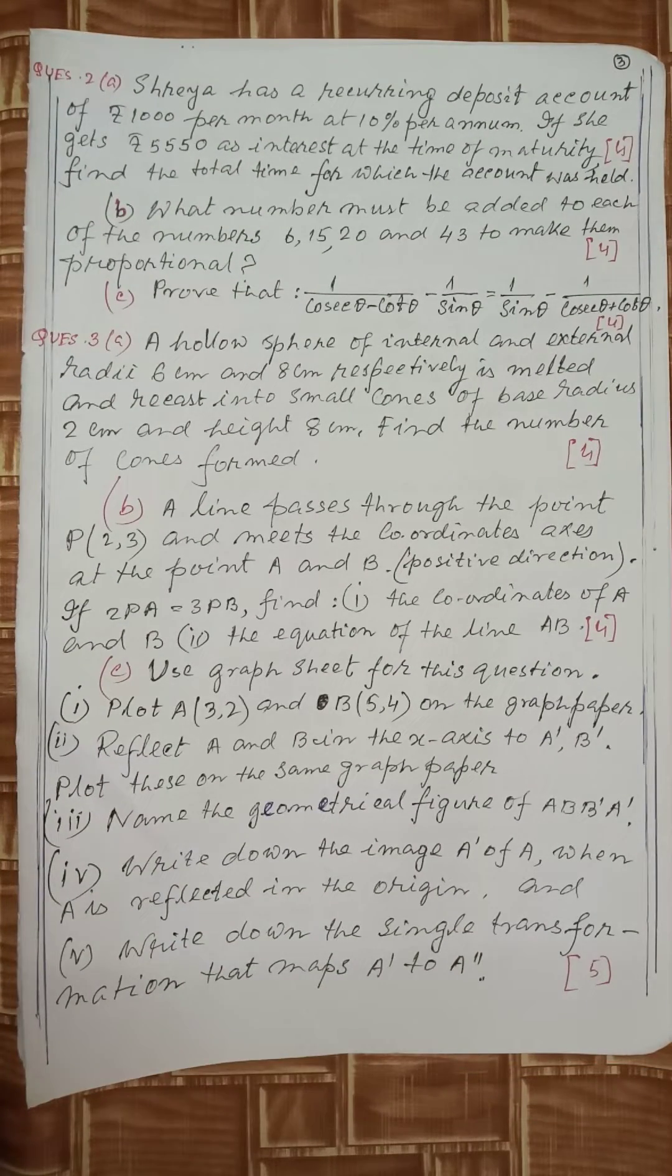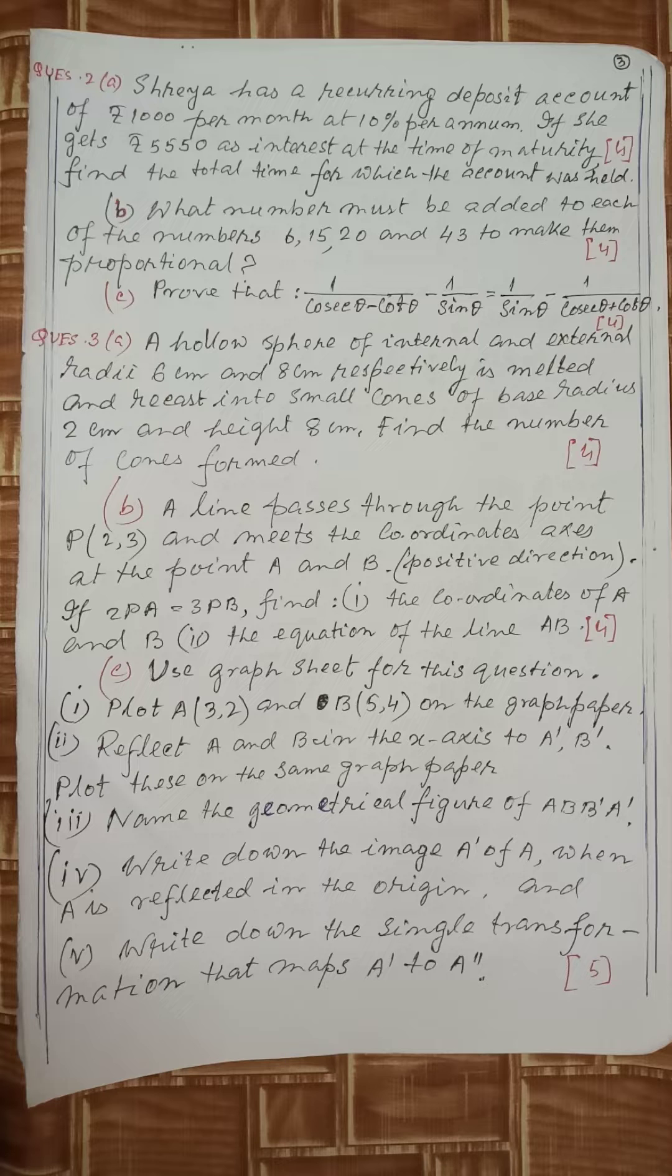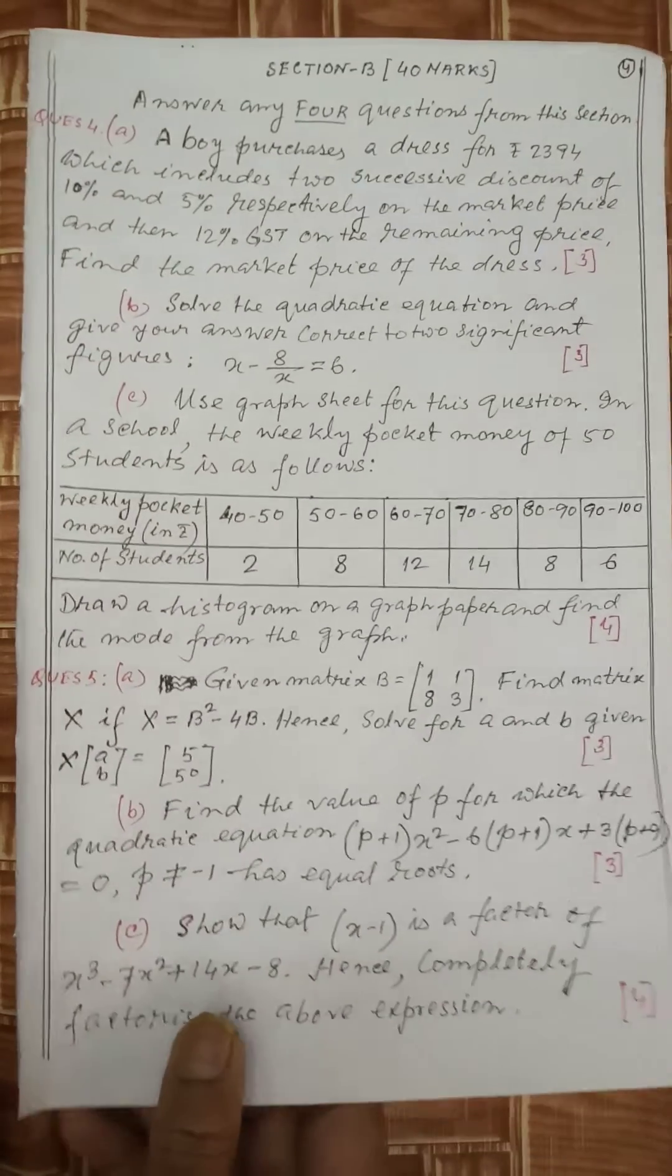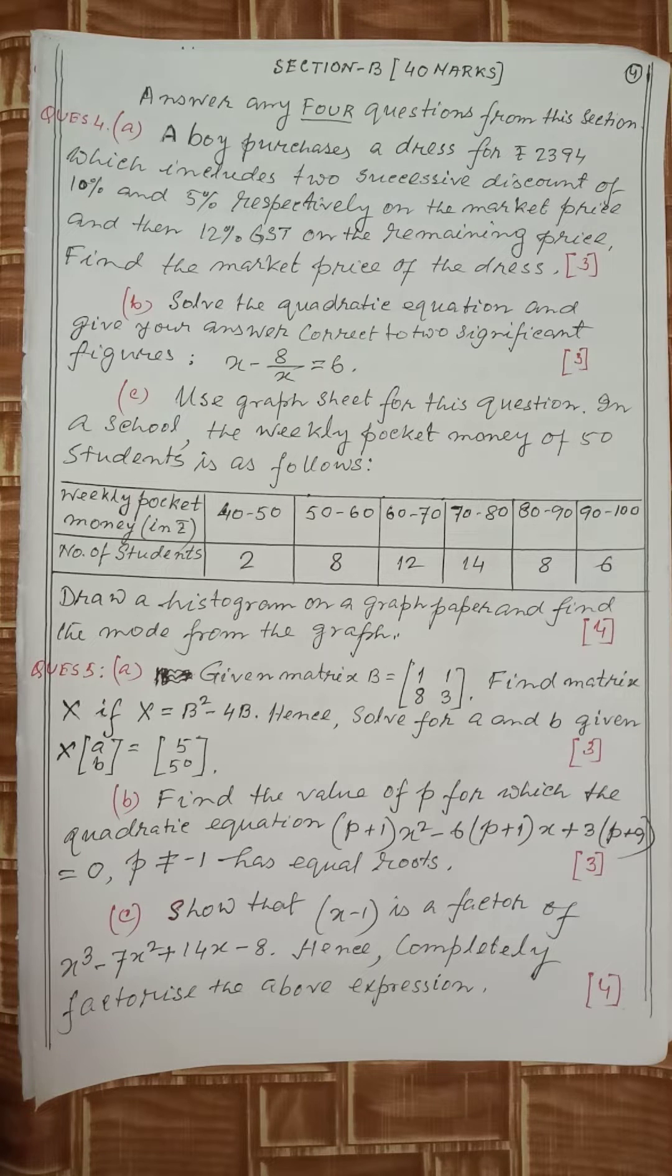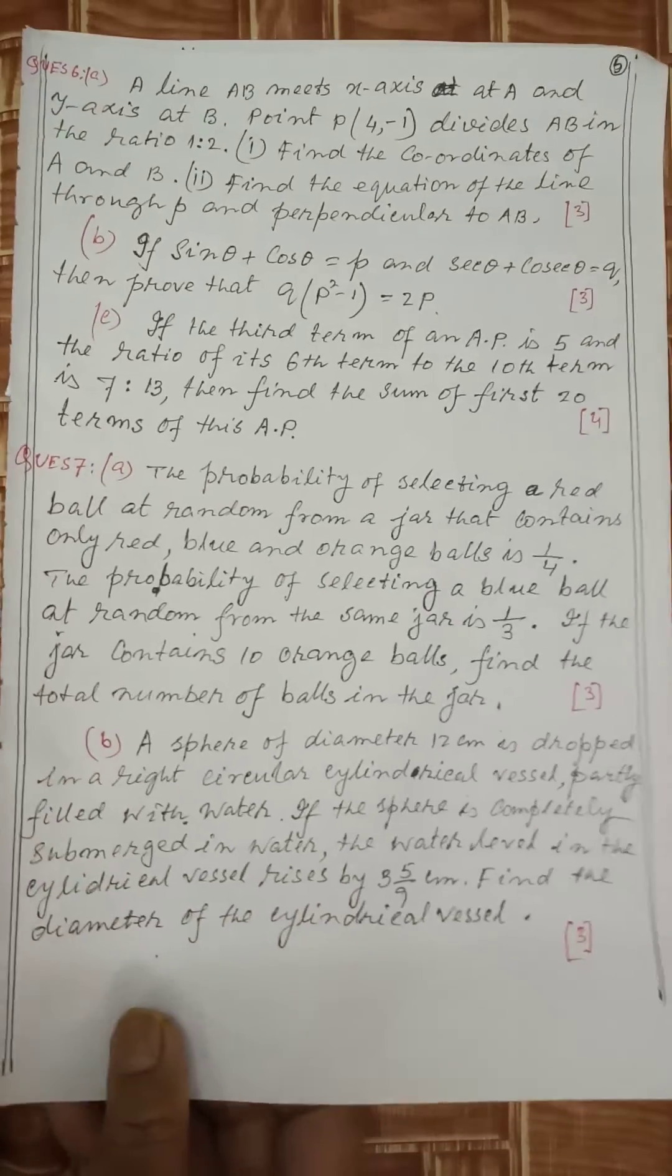If you can't finish within 2 hours 30 minutes, you must try again. Section A, you have to answer all, and from Section B you have to answer 4 out of 7. The answer of this question paper is not given here.